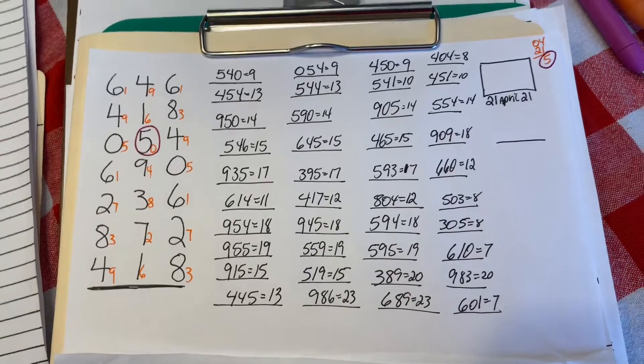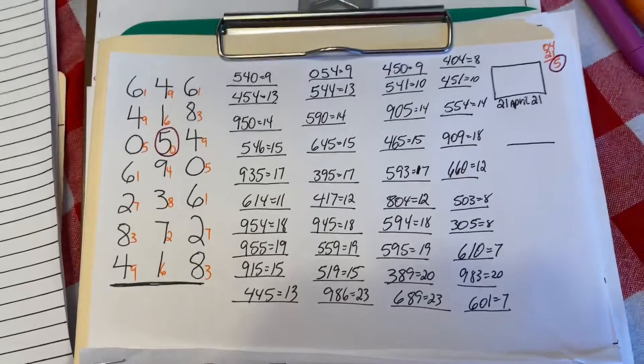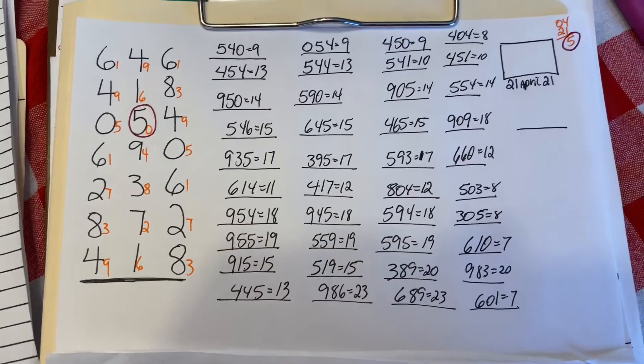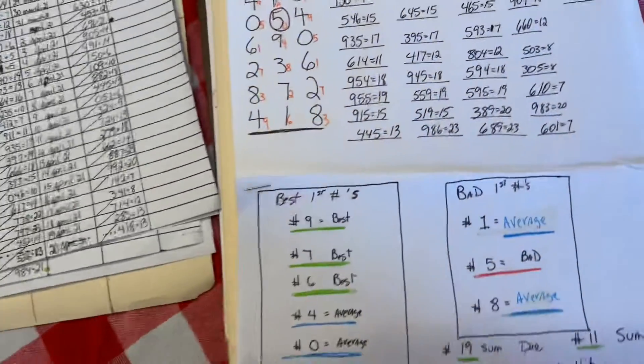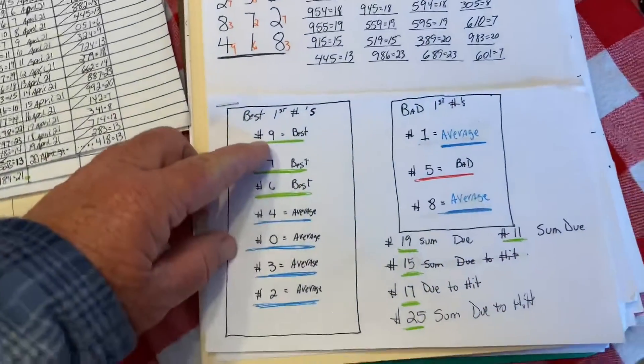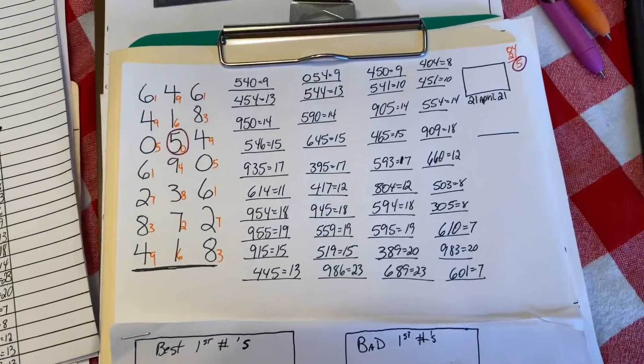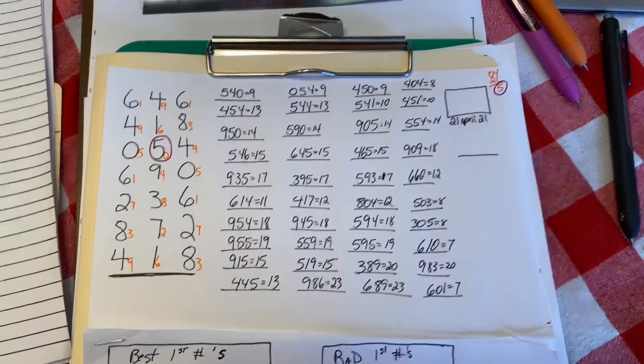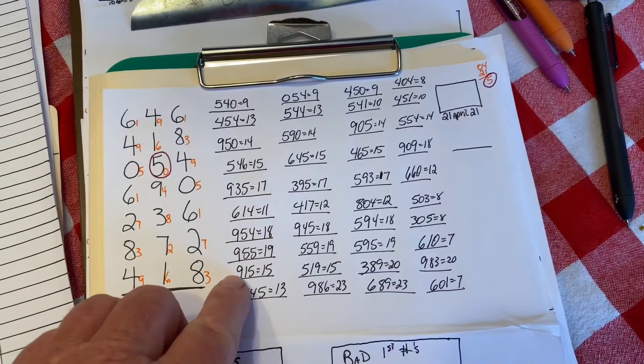Maybe one of these numbers will show up tonight on tonight's drawing. I surely hope so. Like I was saying on these numbers right here, your first number in the beginning, number nine, I have quite a few of those on the list. That's one of the best numbers to pick between the nine and the seven in the very first number on this right here, in the beginning.